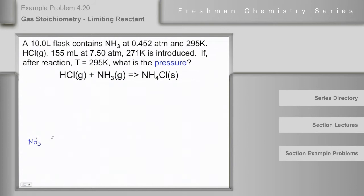Since ammonia is a gas, under these circumstances we can use the ideal gas law, N is equal to PV over RT, and we are given the pressure at 0.452 atmospheres and the volume is 10 liters. R, and T is 295 kelvin, and when I did that I got 0.187 mole.